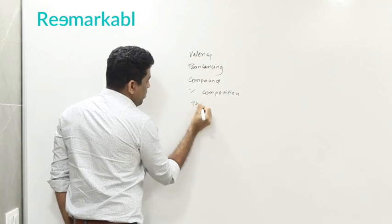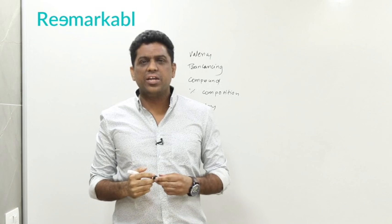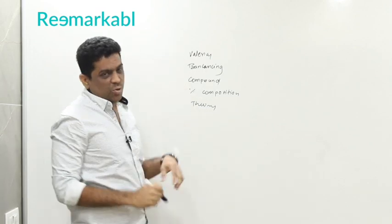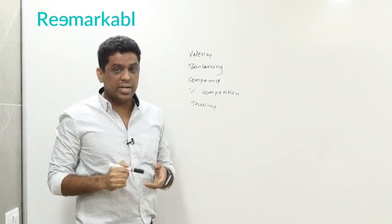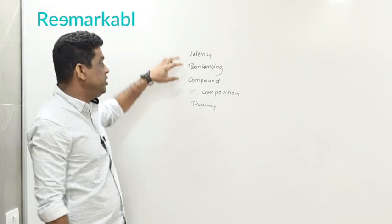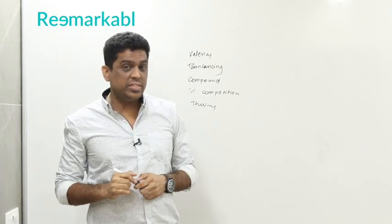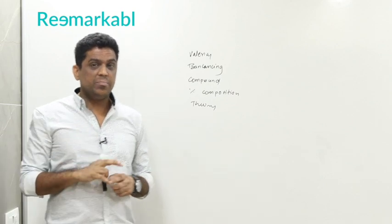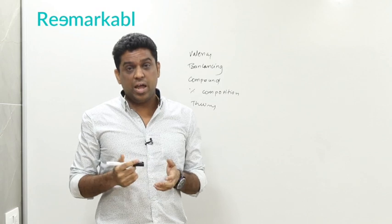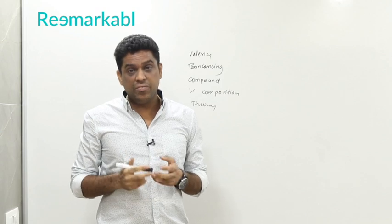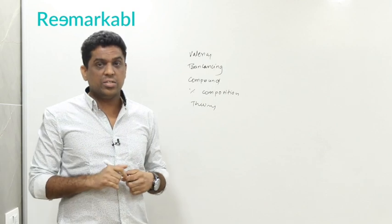Composition and some theory parts — theory includes definitions and give-reasons. These two are the most important parts, not only for 9th standard but for entire chemistry. You must be thorough with your valences. Page number three — be thorough. In your free time, learn at least five valences every day.